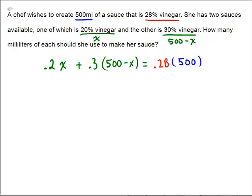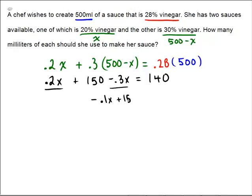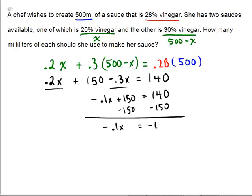Now we can do some algebra to solve this equation. So 0.2x plus 0.3 times (500 minus x) — that's 150 minus 0.3x — equals 0.28 times 500, which is 140. Collecting like terms: negative 0.1x plus 150 equals 140. Subtract 150 from both sides to get negative 0.1x equals negative 10. Divide by negative 0.1, and we get x equals 100.